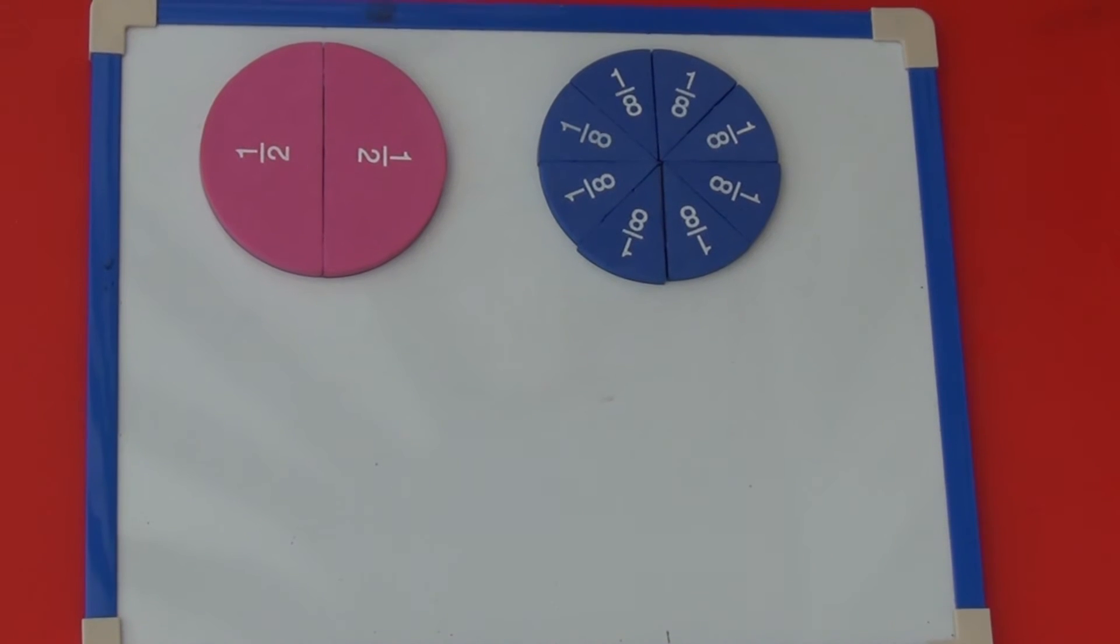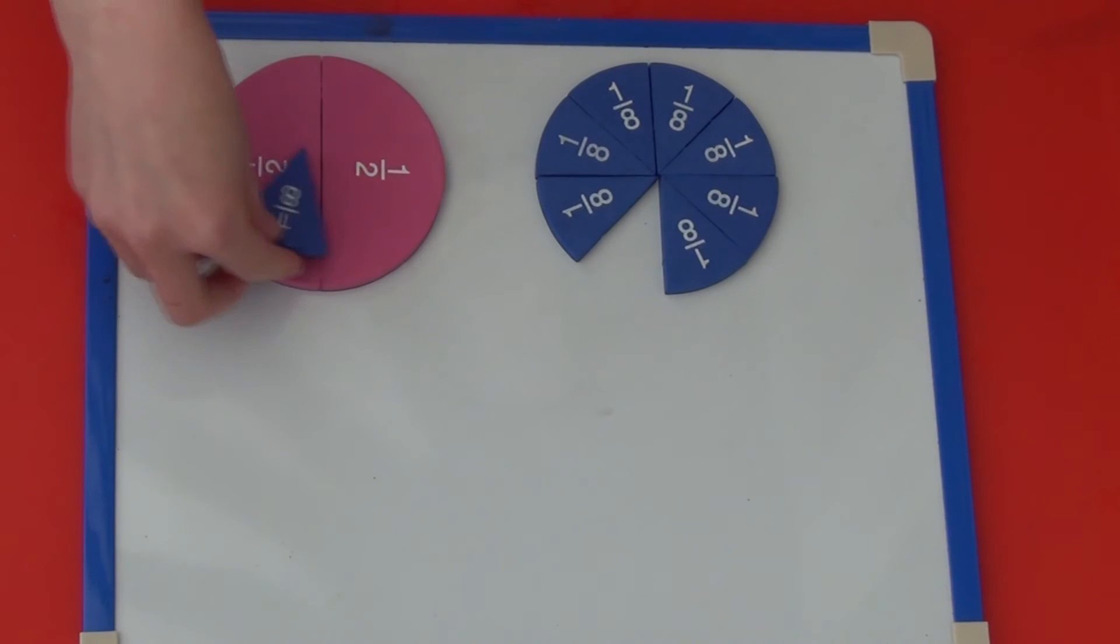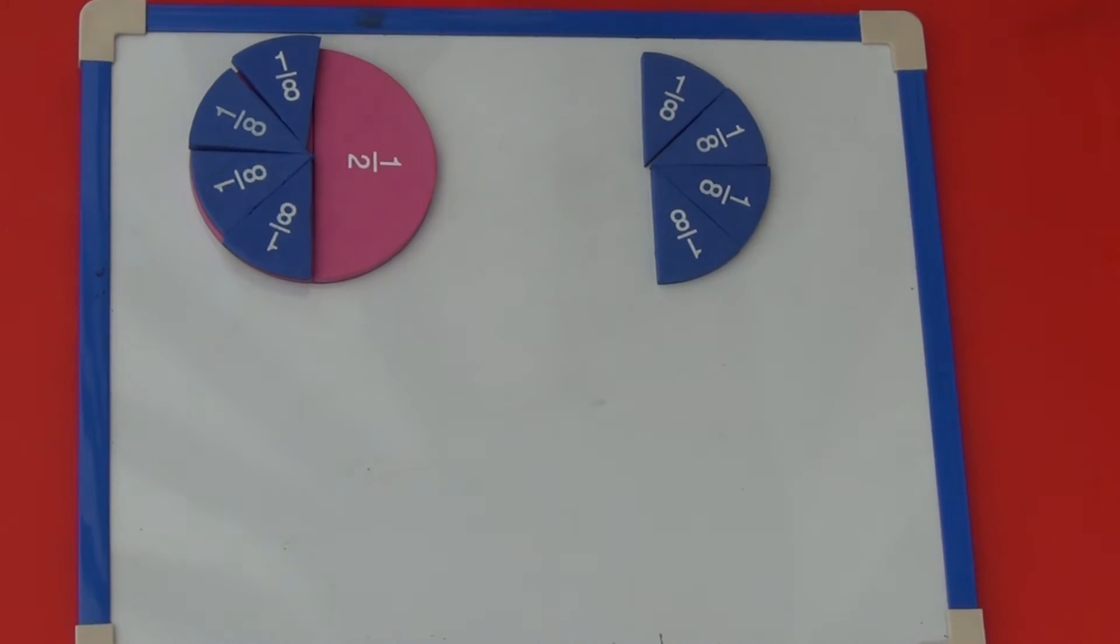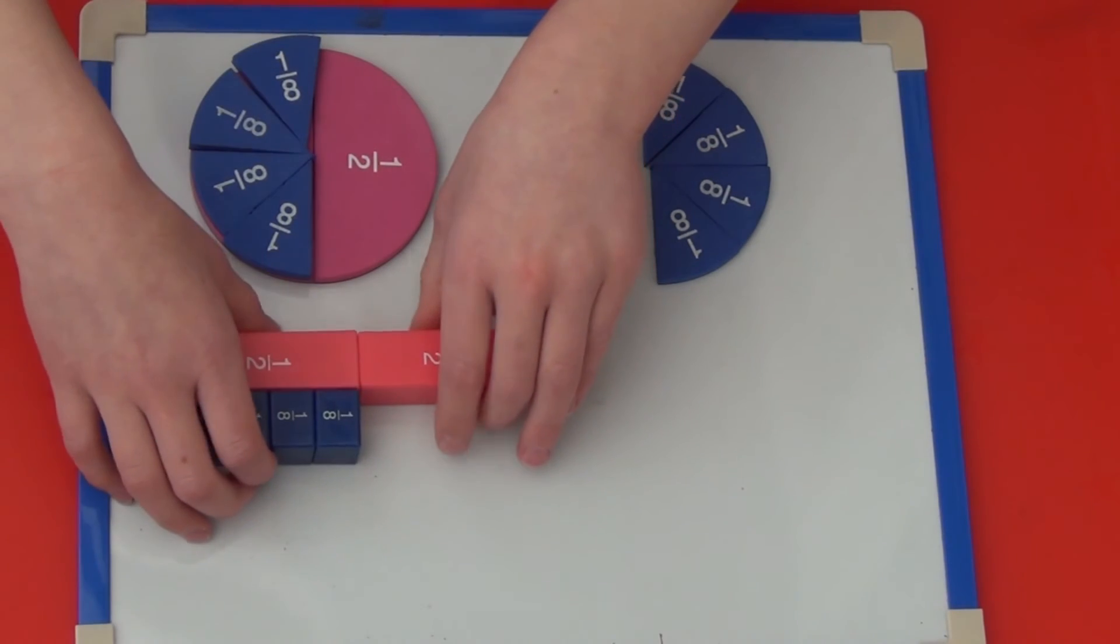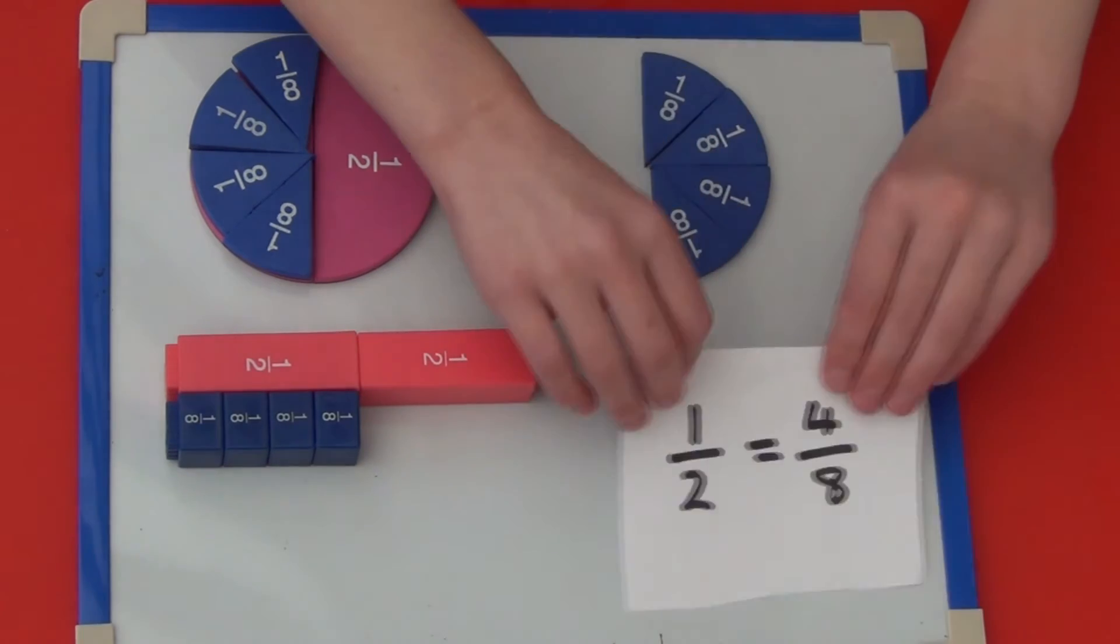For my next one we can see that one half is the same as four-eighths. So one half equals four-eighths.